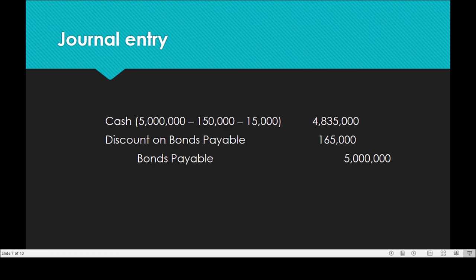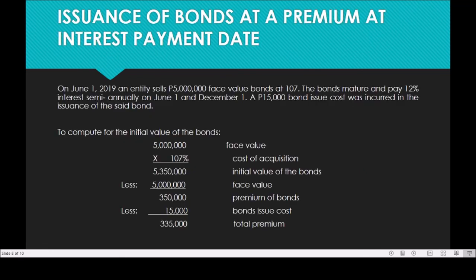For the issuance of bonds at a premium at interest payment date, using the same facts as the previous problem except the selling price of the bonds is at 107 — meaning beyond 100% is the cost of acquiring the bonds for the investor. The same bond issue cost applies. To compute the initial value: 5,000,000 multiplied by 107% gives proceeds of 5,350,000. Less the 5,000,000 face value, the premium on the bonds amounts to 350,000.